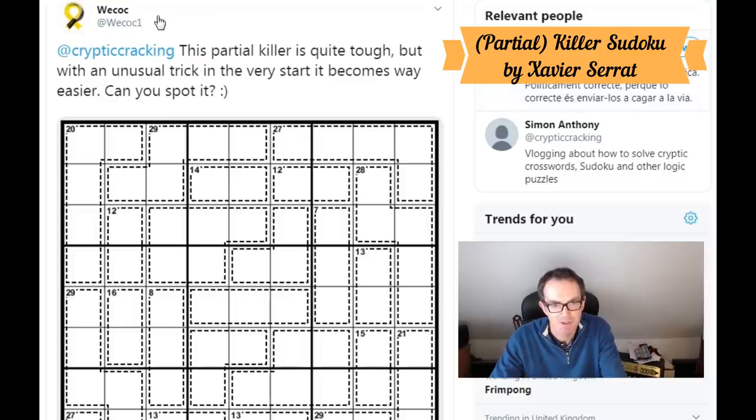And it comes from somebody with the handle Weecock, or however you say that. But I know this is Xavier Surratt, because we've done a couple of his puzzles before. He's a very fine puzzle constructor, and he set me this challenge. He says this partial killer is quite tough, but with an unusual trick in the very start, it becomes way easier. Can you spot it? And I'm a sucker for a challenge like this. So Xavier, you've got me. I'm going to try it.